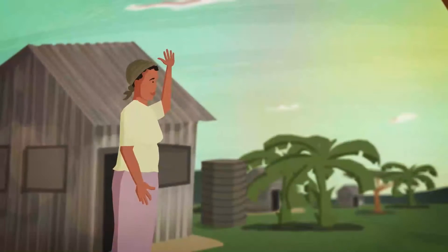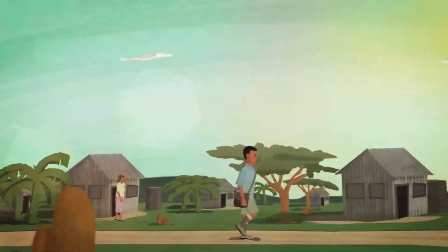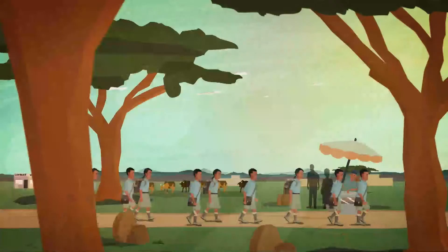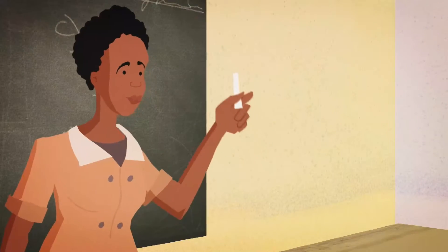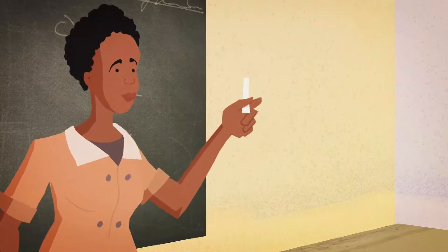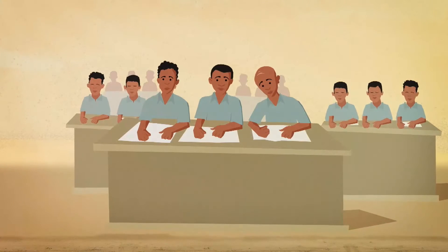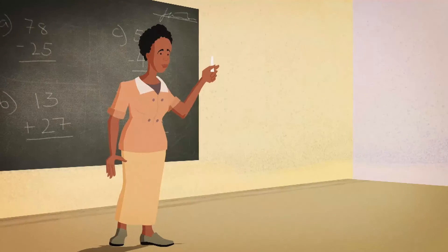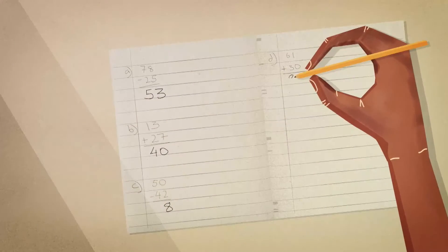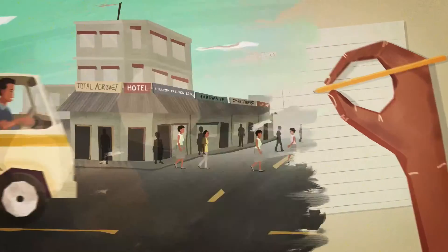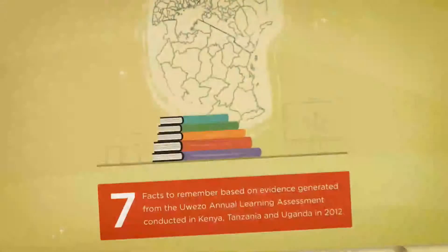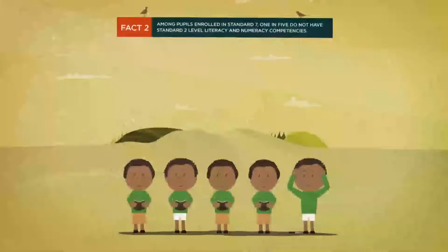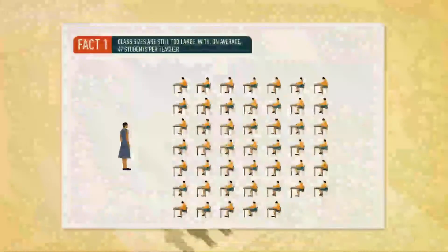This is where WEZO comes in. Our motivation is simple. We send children to school because we expect them to learn. Of course, we expect schools to have motivated teachers and a safe and welcoming environment. But most importantly, we expect our children to learn, to become successful and become productive members of our communities. The evidence, however, tells us that many children across East Africa are not learning.